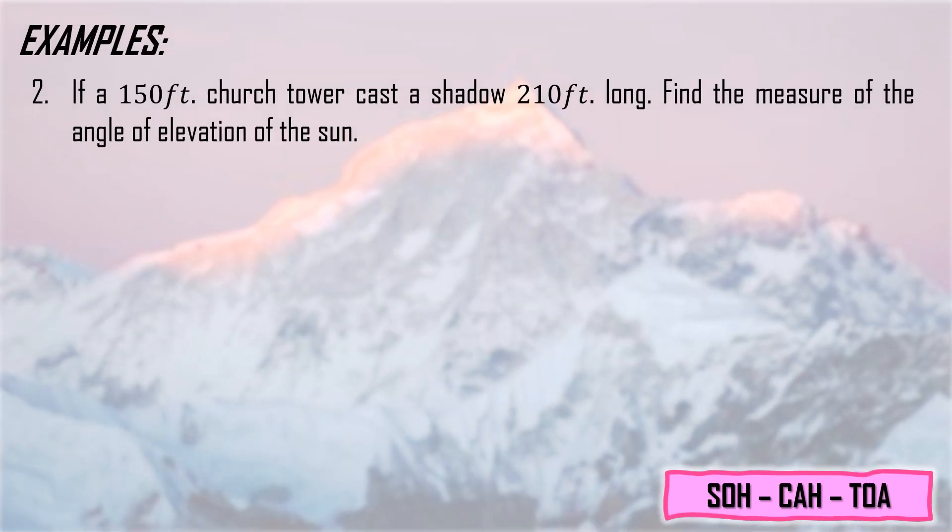Second example: If a 150 feet church tower casts a shadow 210 feet long, find the measure of the angle of elevation of the sun. We represent the church as this. The shadow is here represented by H. The sun is up here at the top. The church created a shadow because of the sun, which we represent as H.